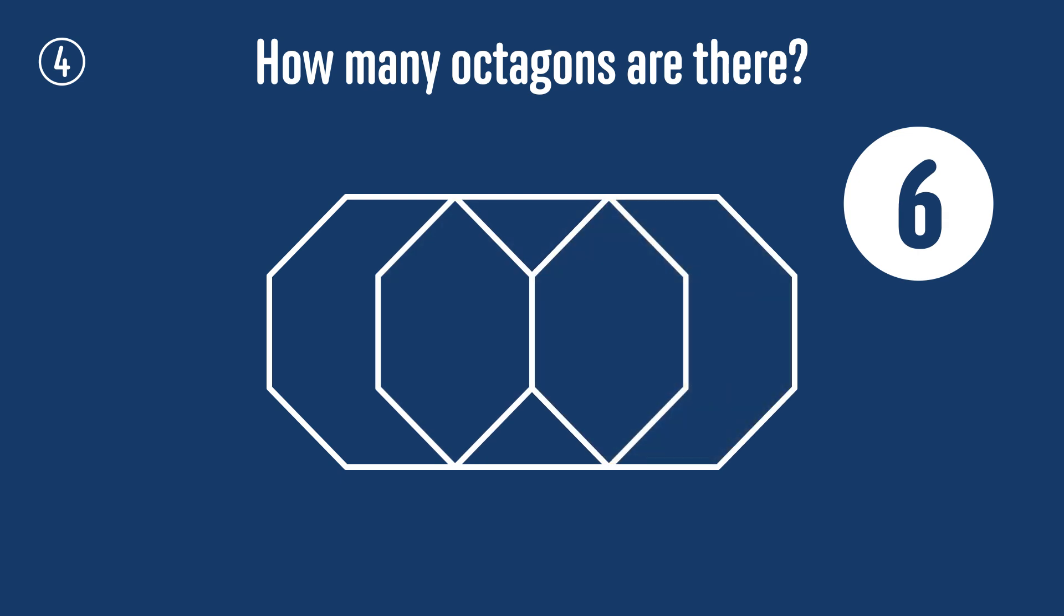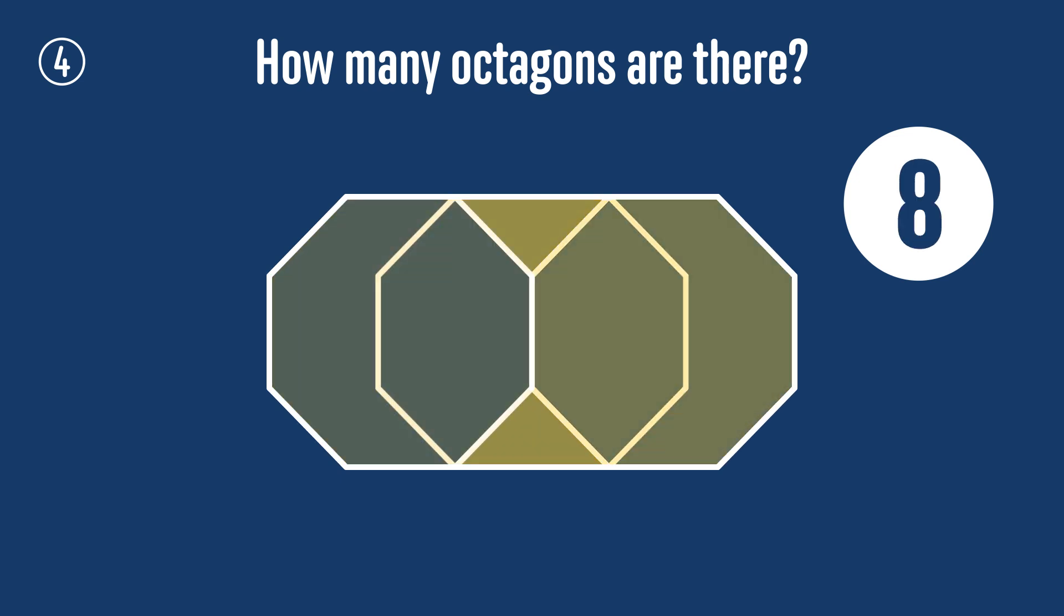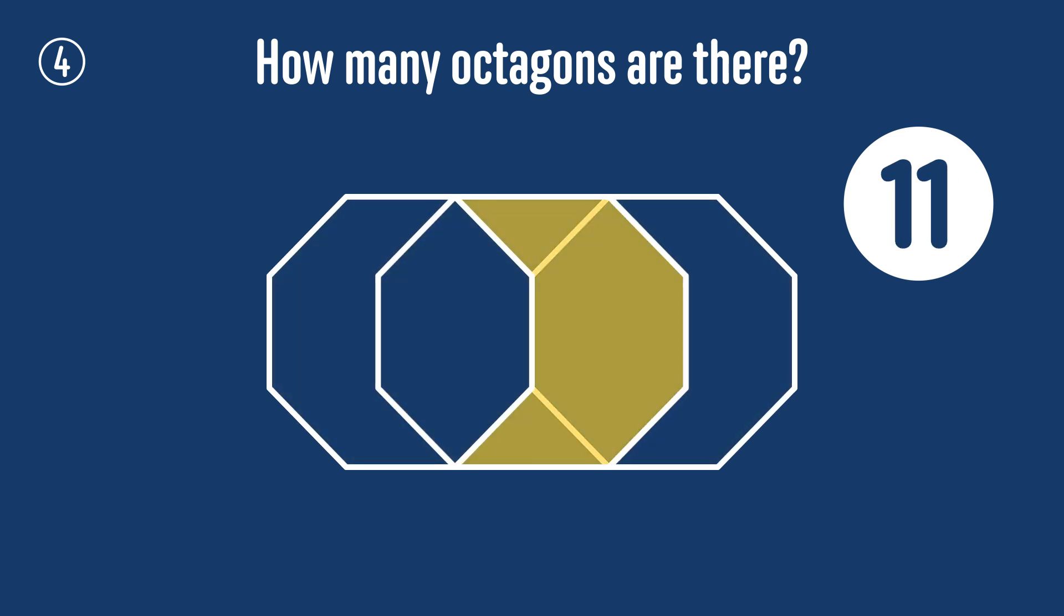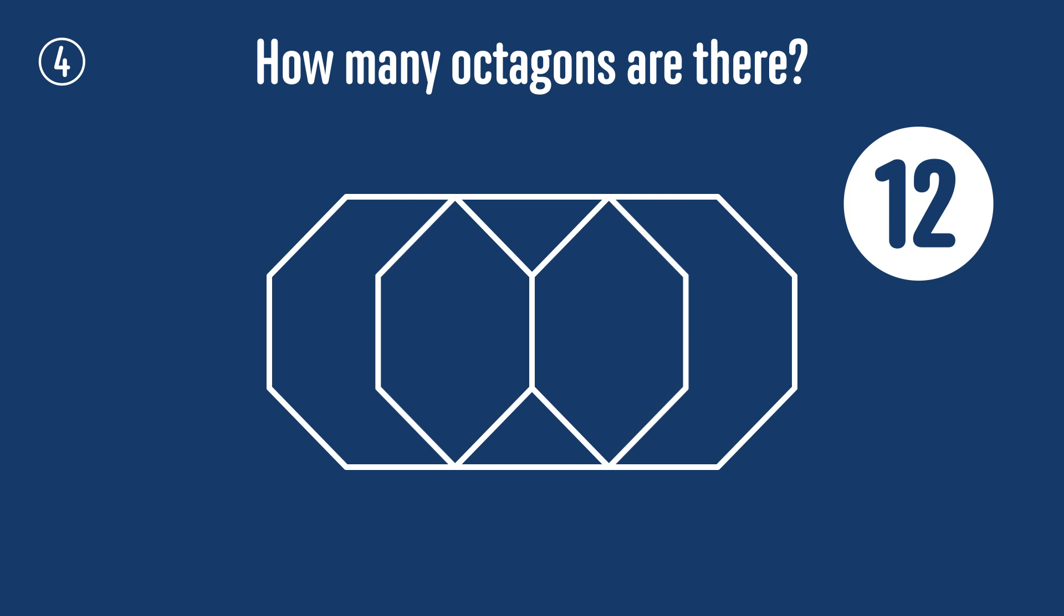But we're not done. We can also draw octagons like this. There are two of this shape, and finally this is an octagon too, and there are four of these, so that brings the total up to 12. Some of these are quite easy to miss, so well done if you got them all.